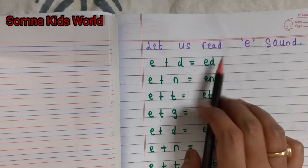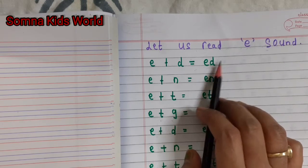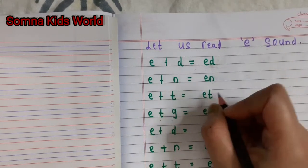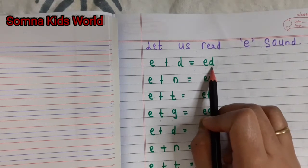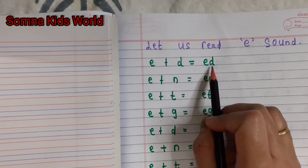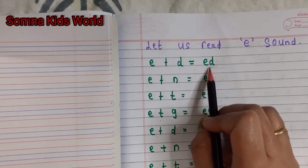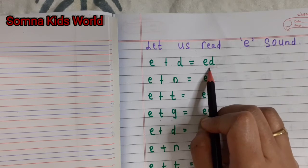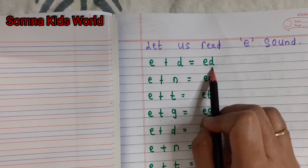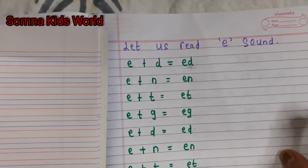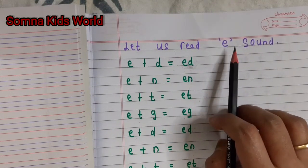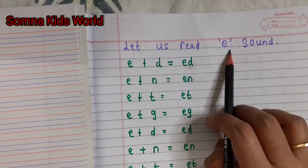I'm going to start with the two-letter words first, then I'm going to share with you the CVC words. Before going to these two-letter words, let me tell you — the kids should know the phonic sounds properly. If the kids know the phonic sound of each letter, then they can read these two-letter words very easily.